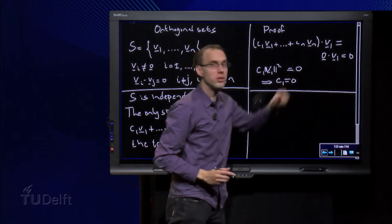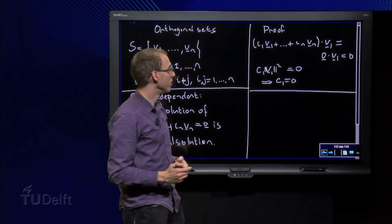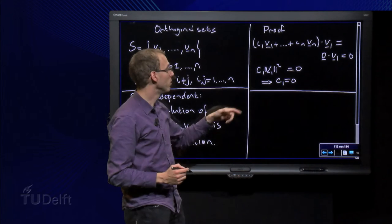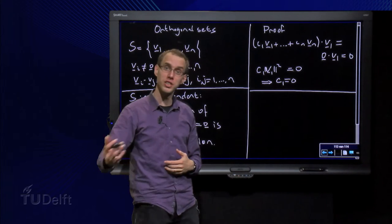Now here we took the inner product with V1 which is a choice. We can do that as well with V2, and we would have as a conclusion C2 equals zero.